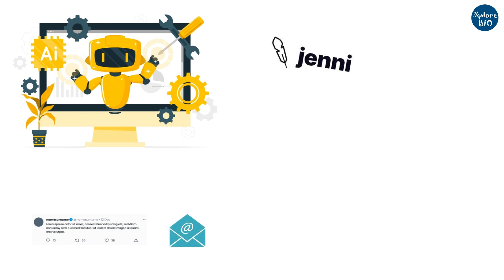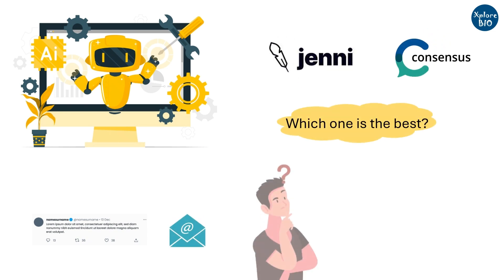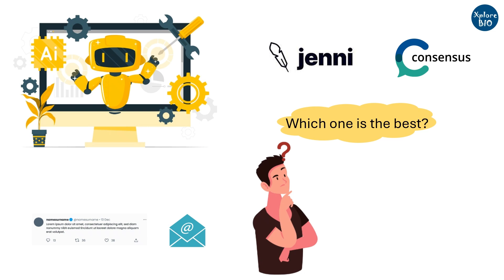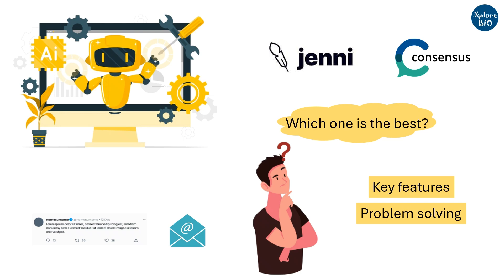I receive comments and emails regularly from my viewers, and I commonly find two names: Jenny and Consensus. But which tool is best for literature search and writing? To find out, we must check their features and the problems each tool is capable of solving that matter to a researcher.